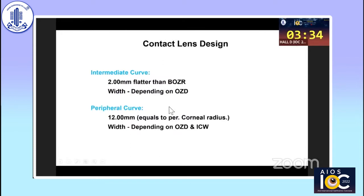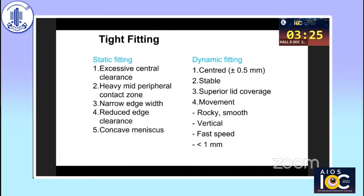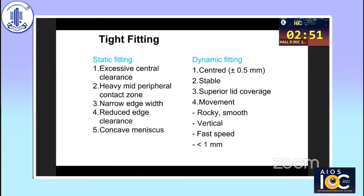The optic zone ranges differ for different lens types. Peripheral curves need to be flatter as the corneal curvature changes towards the periphery. For fitting dynamics, we assess lens movement — the lens should be centered, stable, and ideally under the upper lid so the patient is comfortable. With tight fitting, there would be excessive central clearance, heavy mid-peripheral contact, decreased edge clearance, and three and nine o'clock corneal staining, requiring a lens change to prevent corneal surface changes and dropout.